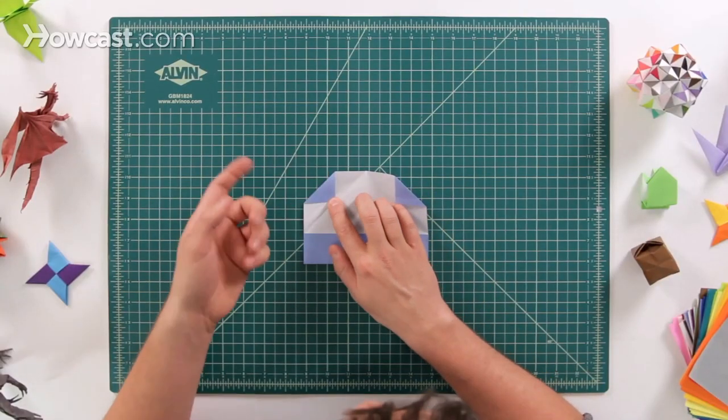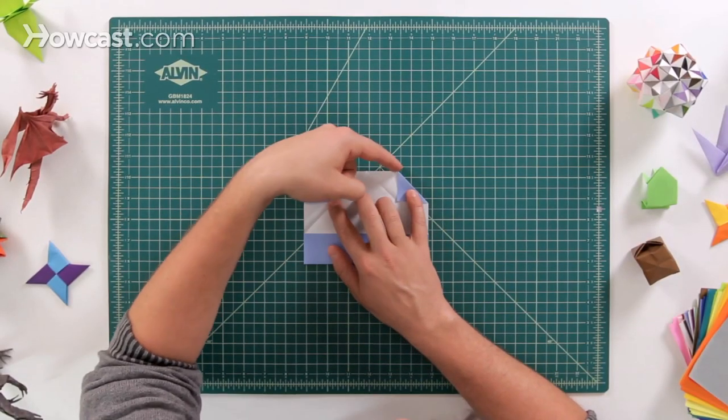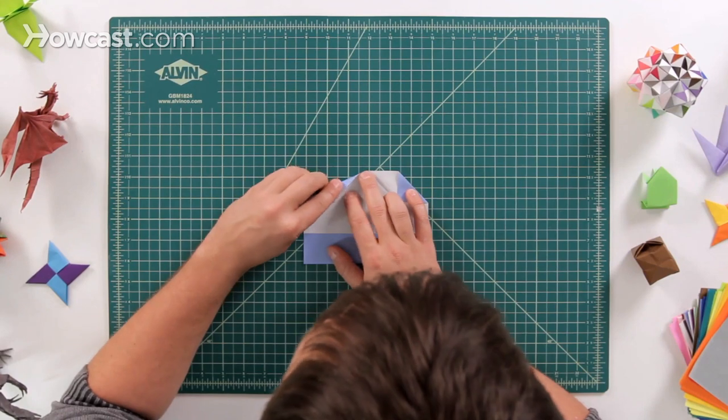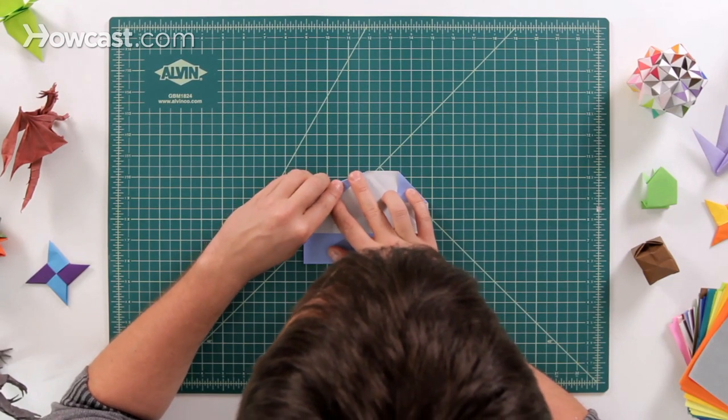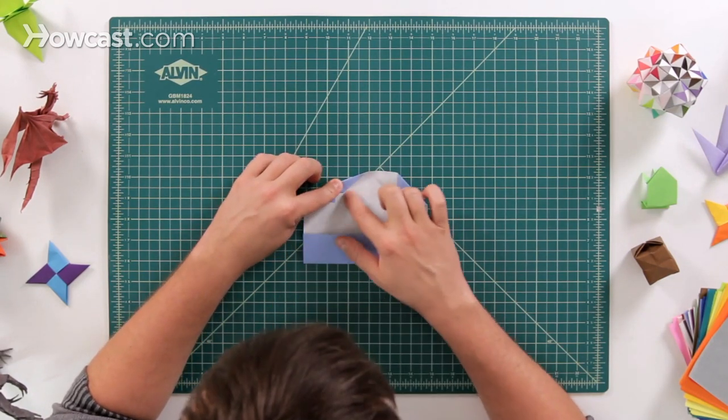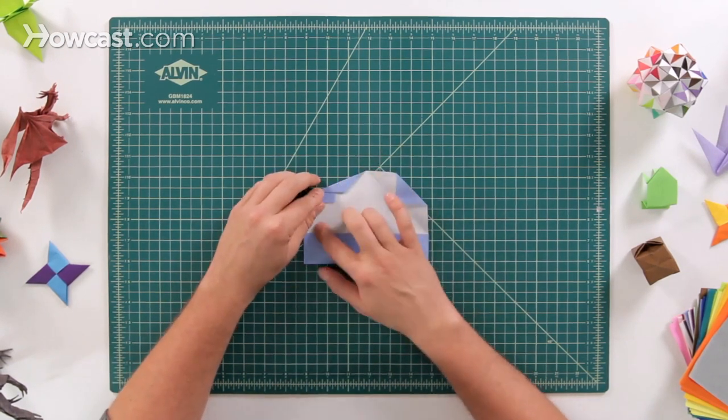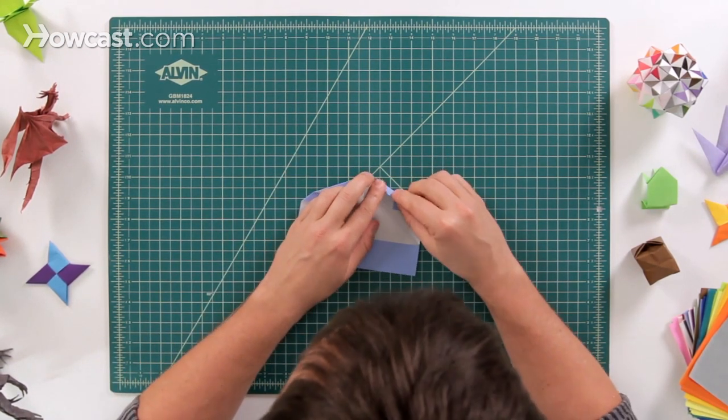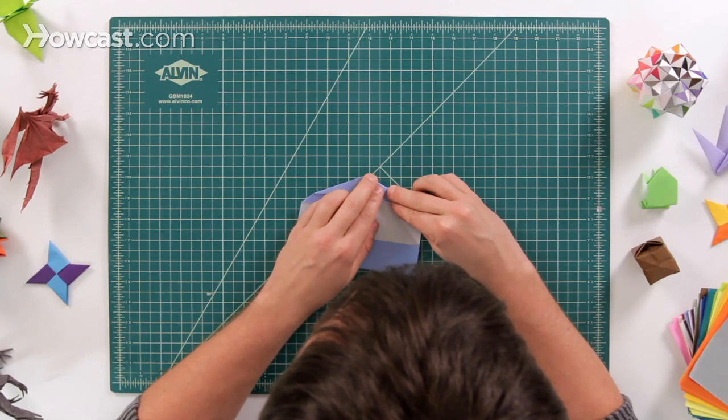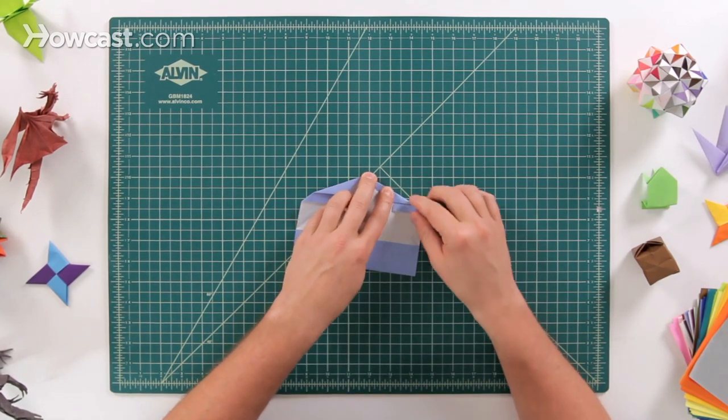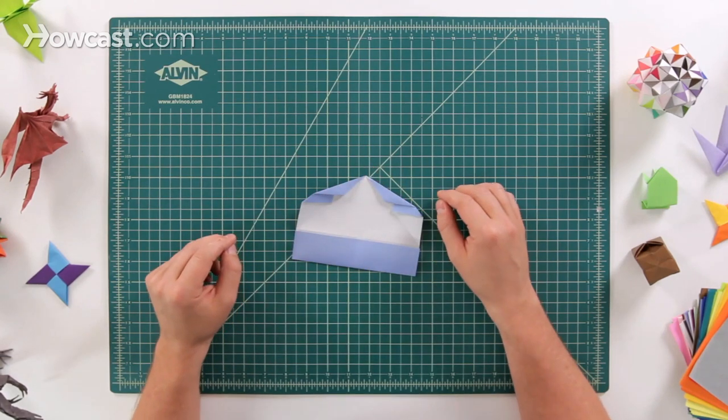Next we're going to do a kite fold. So go ahead and take this top edge right here and right here, and we're going to rotate that over so that it lines up right on that line that we created with the blintz folds. So go ahead and fold that down. Come over to the other side and fold that one down as well, just like that.